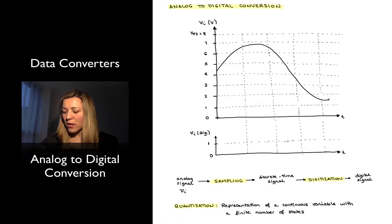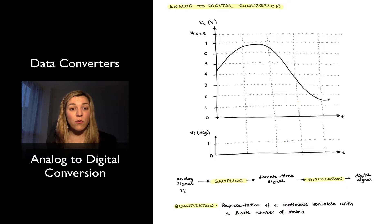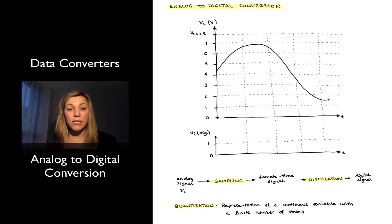I want to convert this signal into a digital form, which is basically a sequence of 1s and 0s. The first step in that process, once I have my analog signal, is that of sampling the signal.